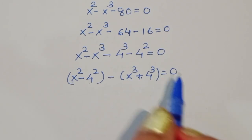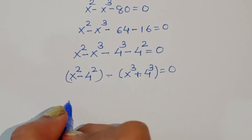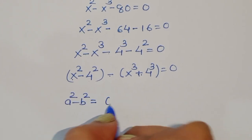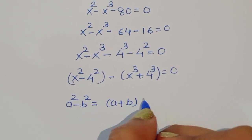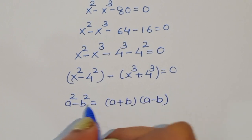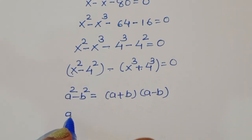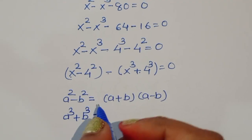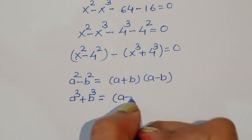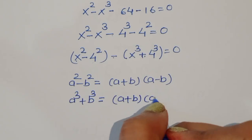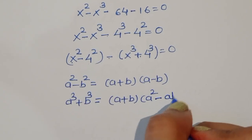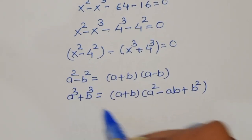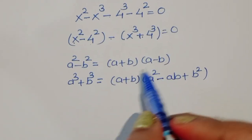We have two formulas to apply here. The first formula is: a squared minus b squared equals (a plus b)(a minus b). The second formula is: a cubed plus b cubed equals (a plus b)(a squared minus ab plus b squared). We will apply both of these formulas to our expression.